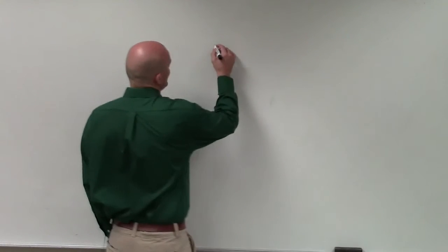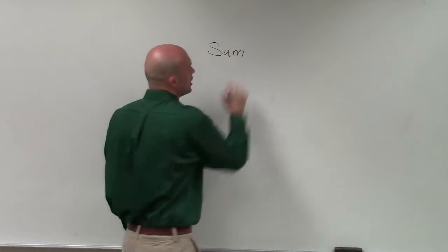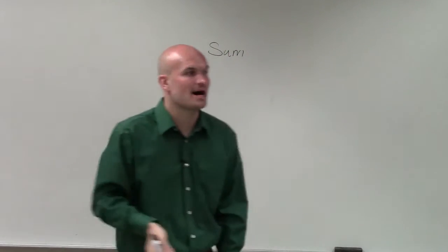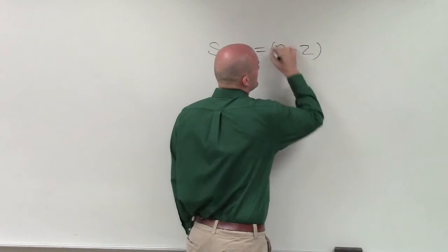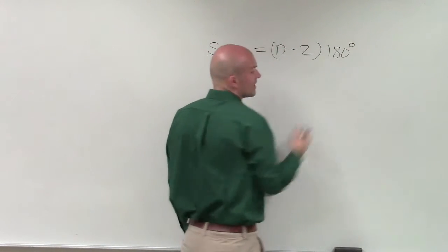So there's two things that we've talked about as far as our angles. If we wanted to find the sum of the interior angles of a polygon, we just take n minus 2 times 180 degrees, right?